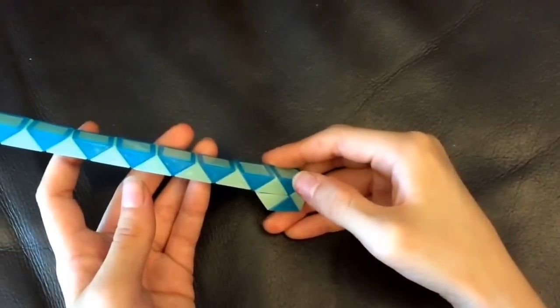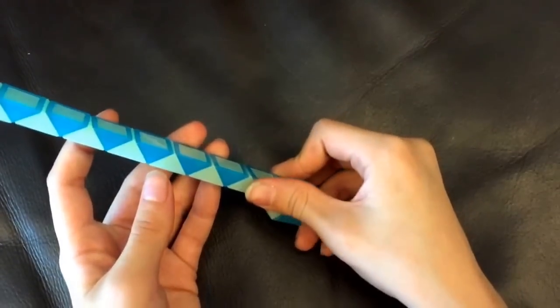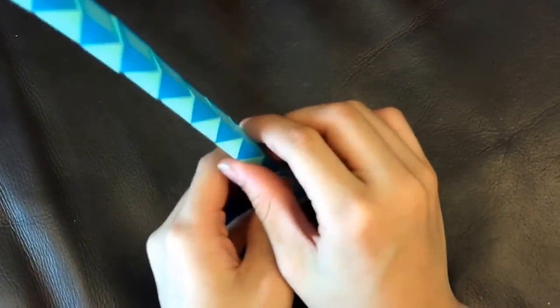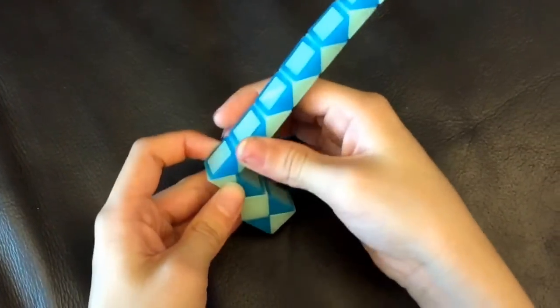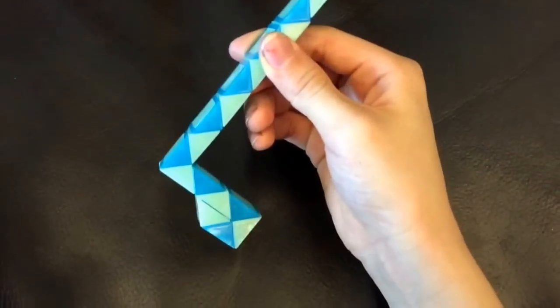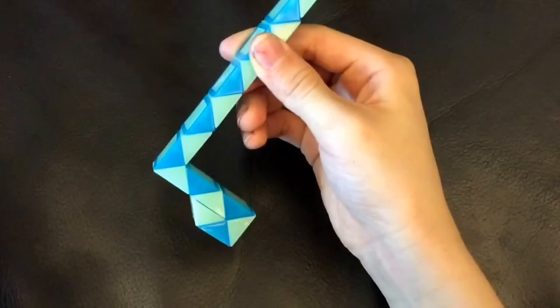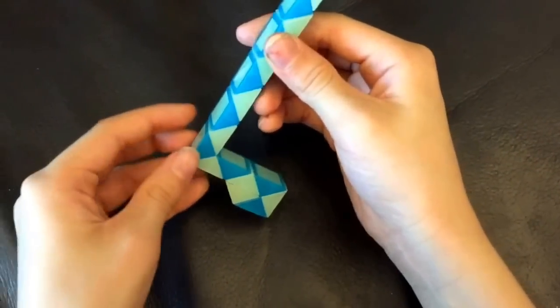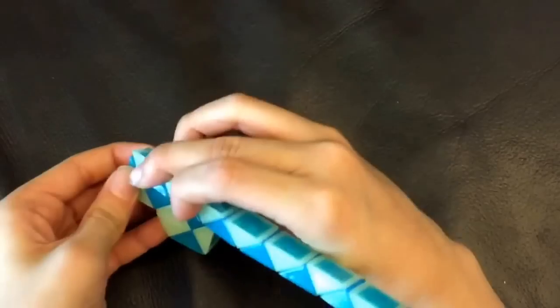Now, you're going to count one, two, three, four, and then the fifth one is going to go right. Now, this white one is going to go down.